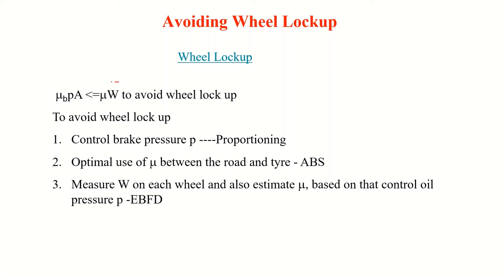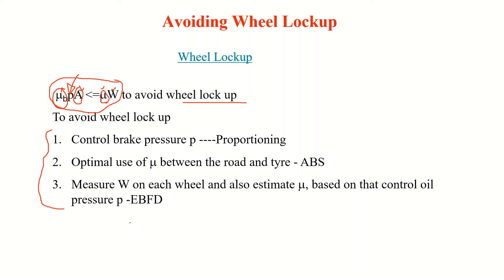The requirement is: mu_b × P × A must be less than or equal to mu × W. The wheel cylinder area A is fixed. Mu is determined by the road-tire interface. W is the load on the wheel. The only variable we can control is P (the fluid pressure). If we can control P and keep mu_b × P × A less than mu × W, we will not have lock-up. So the question is: how do we control pressure to avoid lock-up using various technologies — this is brake proportioning.